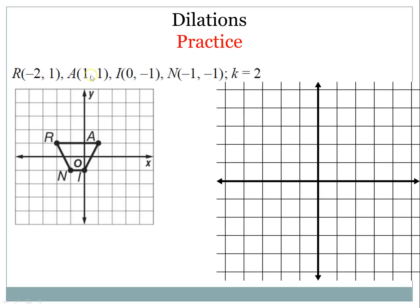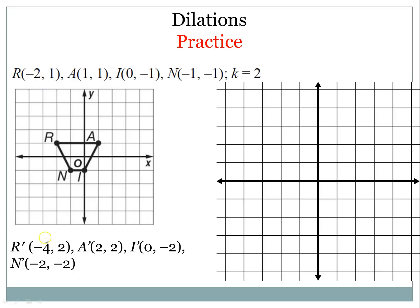So negative 2 times 2, 1 times 2, 1 times 2, 0 times 2, and so on — and I will have the following points. You can see negative 2 became negative 4 because I multiplied by 2, and 1 became 2 because I multiplied by 2. If I graph those points, the trapezoid gets much larger in the coordinate plane. And that's all a dilation is — it's a change in size.